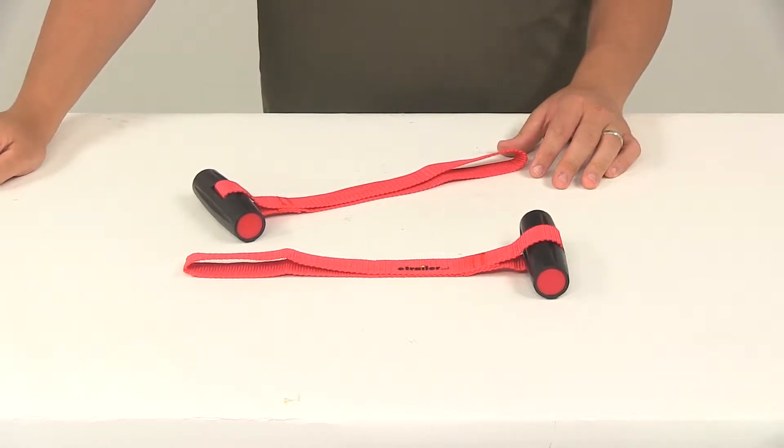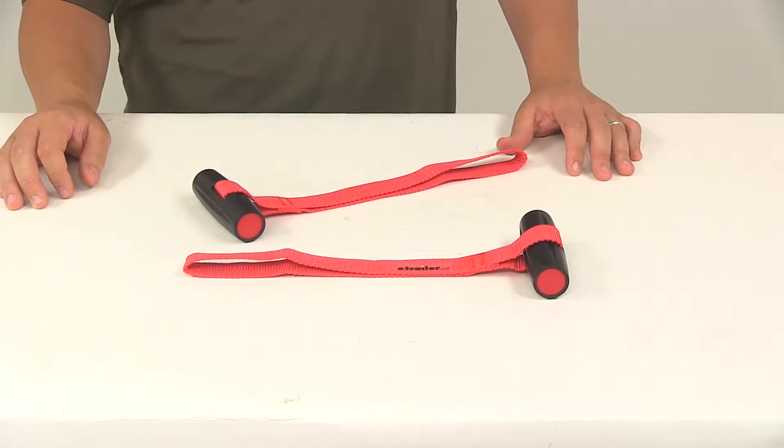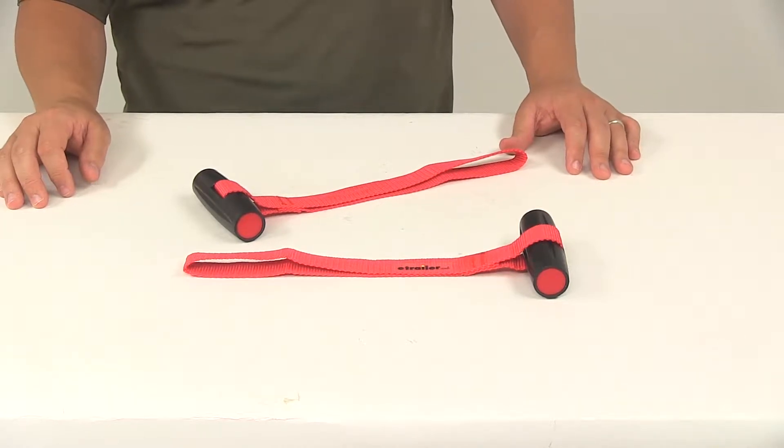Today we're going to be taking a look at the Malone Quicklash T-Style Hood Loops for bow and stern tie downs. This kit provides under the hood or behind the rear hatch attachment for vehicles without easy to access tie down points.